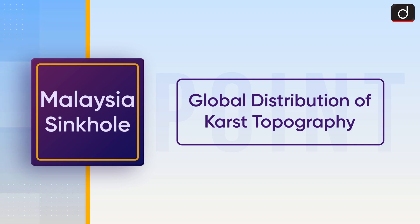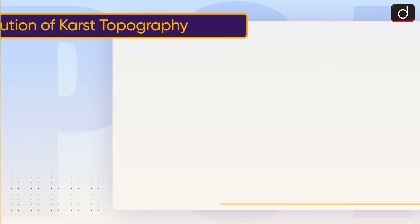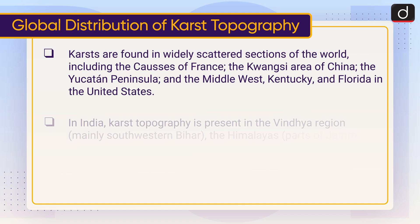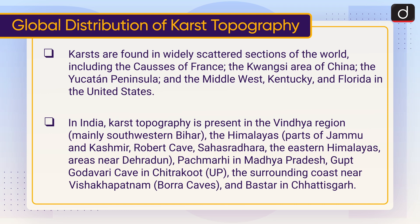Now let us talk about the global distribution of karst topography. Karst is found in widely scattered sections of the world, including the Causses of France, the Guangxi area of China, the Yucatan Peninsula, and the Midwest — Kentucky and Florida — in the United States. In India, karst topography is present in the Vindhyan region, mainly southwestern Bihar, the Himalayas, parts of Jammu and Kashmir, Robert Cave, the Eastern Himalayas, areas near Dehradun, Pachmarhi in Madhya Pradesh, Gupt Godavari Cave in Chitrakoot Uttar Pradesh, the surrounding coast near Visakhapatnam, Borra Caves, and Bastar in Chhattisgarh.